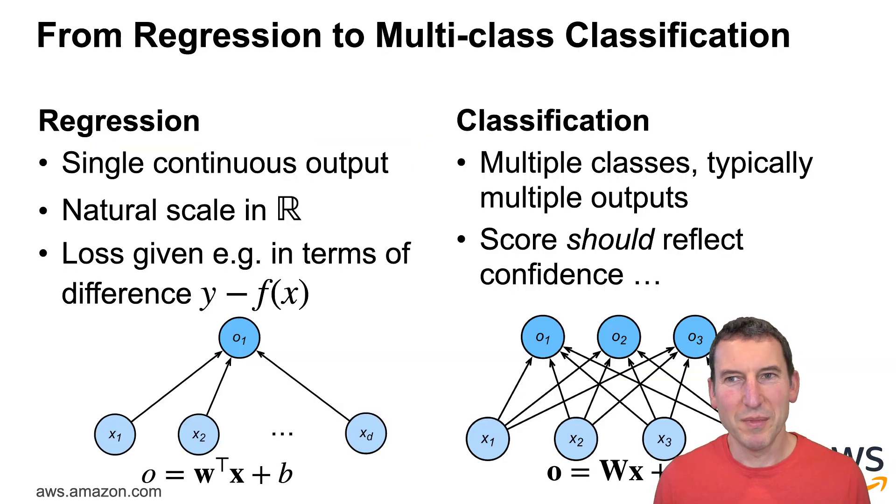So how do we do this? Because this is very different from the regression problem where we had a single continuous output and there was a natural scale. If the house costs a million dollars and I estimate a million and five dollars, that's pretty good and I can take the difference. But what if I estimate that it's a Golgi vehicle and instead it's a nucleus, or it's a digit three versus digit four? In other words, we have multiple classes thus typically multiple outputs and the score should reflect the confidence. So in other words, if the score is really high then this tells me well this is really a nucleus.